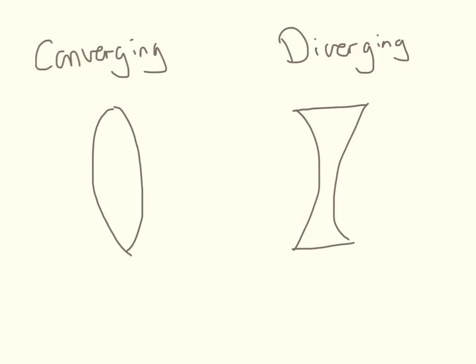So just to remind you there are two different types of lenses, a converging lens and a diverging lens. A converging lens is going to have a positive power and a diverging lens is going to have a negative power.